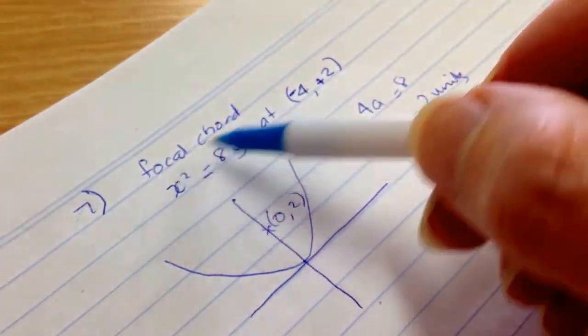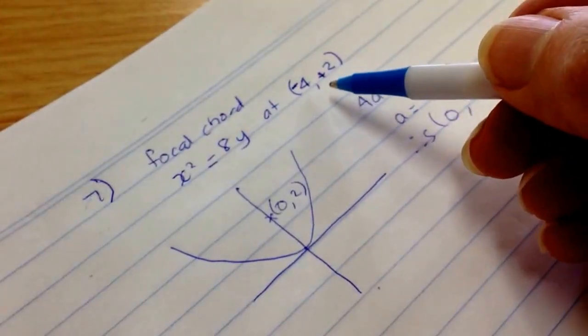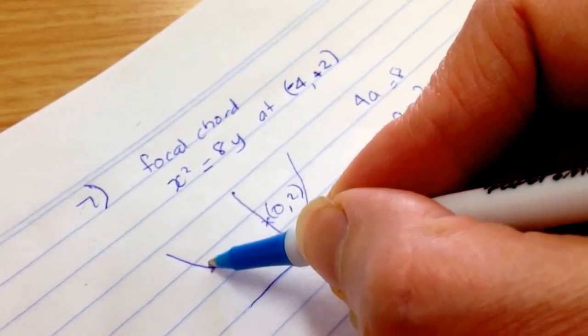So the question says, find the focal chord, the equation of the focal chord that goes through this parabola and through this point. Okay, so minus 4, 2 is here.